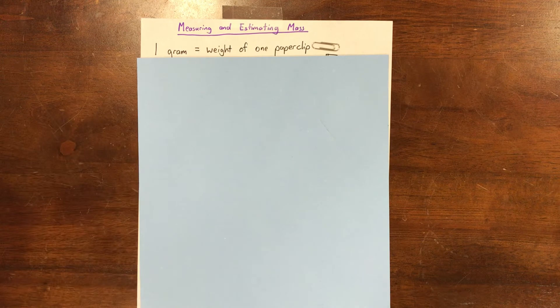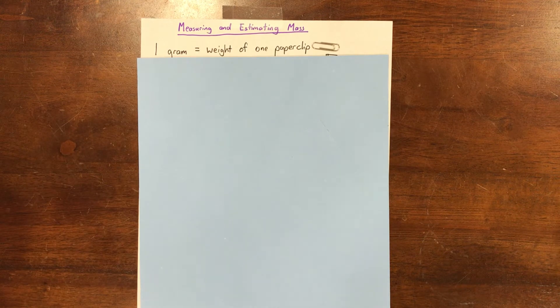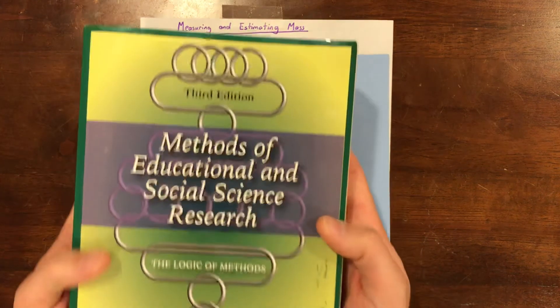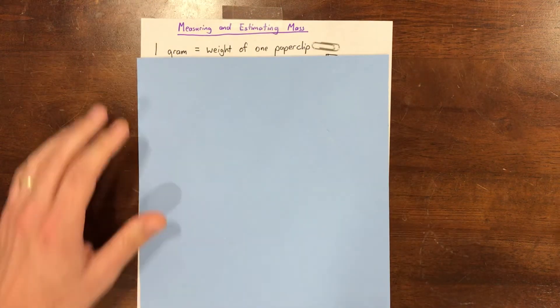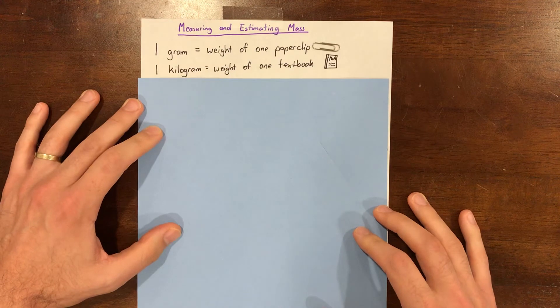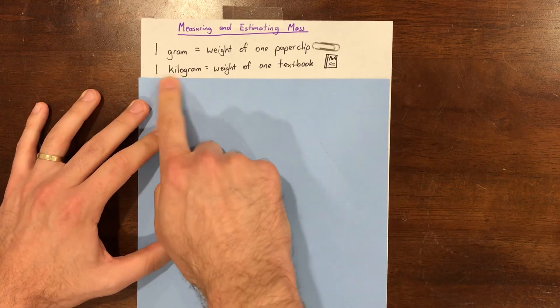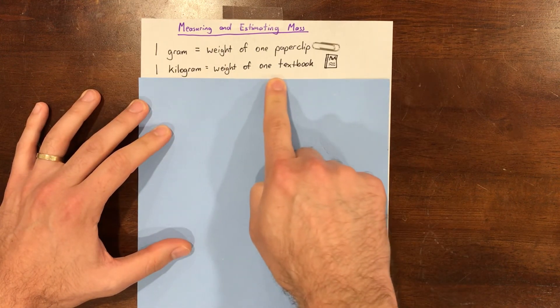The other unit you need to know is a kilogram. A kilogram weighs about as much as a textbook. I've written that for you here, and I'll have this available during the problem of the day. One kilogram equals the weight of one textbook.